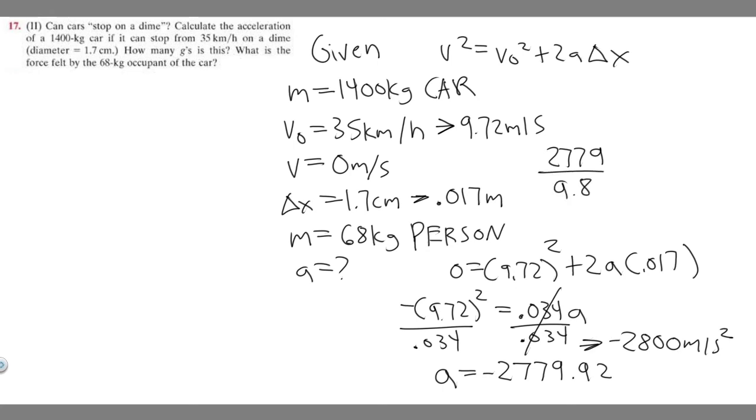Then divide it by 9.8, because for every 1g there's 9.8 meters per second. So just divide by 9.8 and this is going to give it to us in g's. If you go ahead and do this, it's going to be 283.57, and you can round this to 284 g's. But the book tells you it's 280, so they just round a little bit weird. So it's just going to be 280 g's is what the book says.